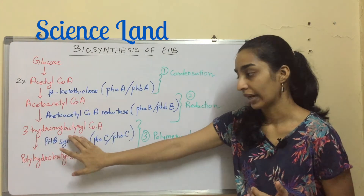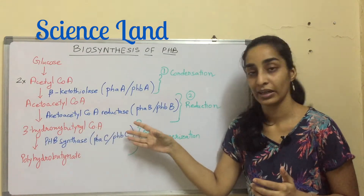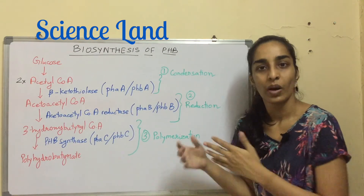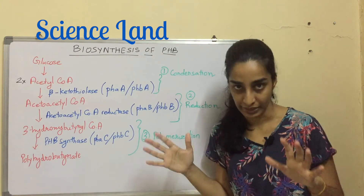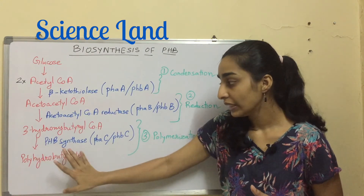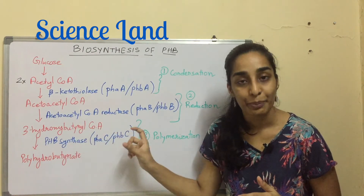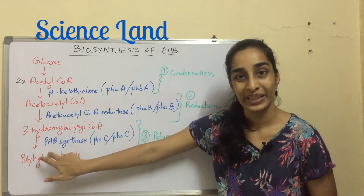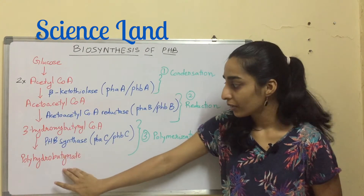The reduction step gives you 3-hydroxybutyryl coenzyme A. Once 3-hydroxybutyryl coenzyme A is formed, it undergoes polymerization — the joining of molecules to form a polymer — with the help of the enzyme PHB synthase. It is called PHB synthase because it synthesizes the PHB compound.